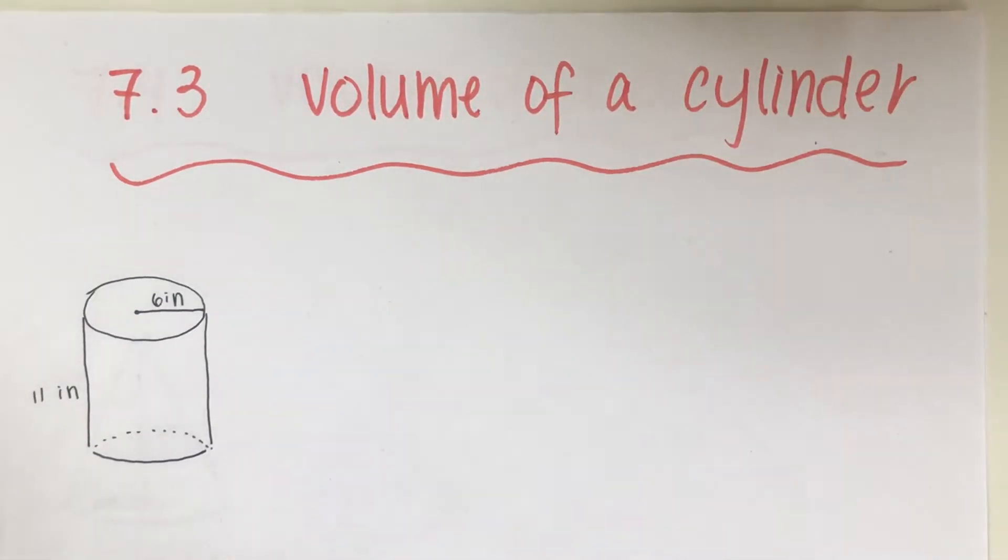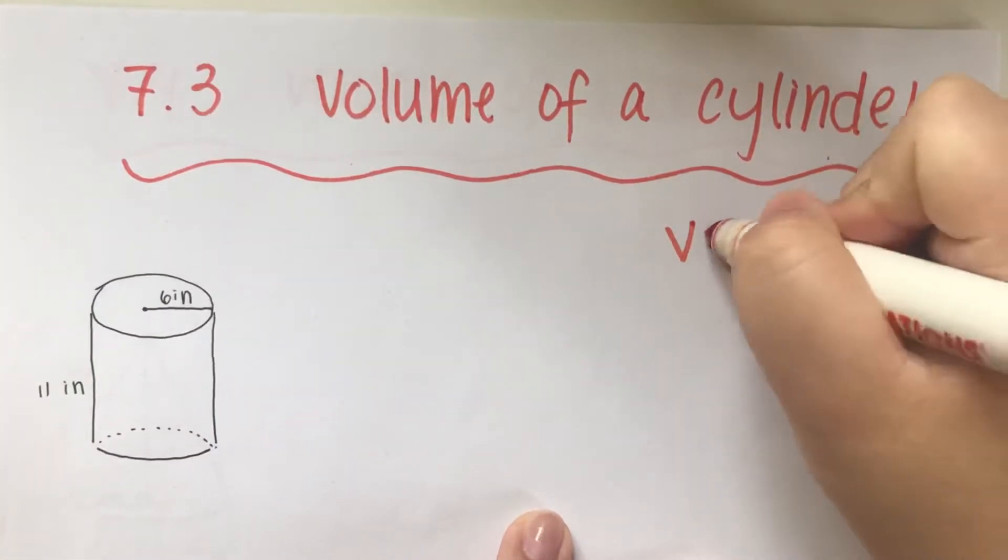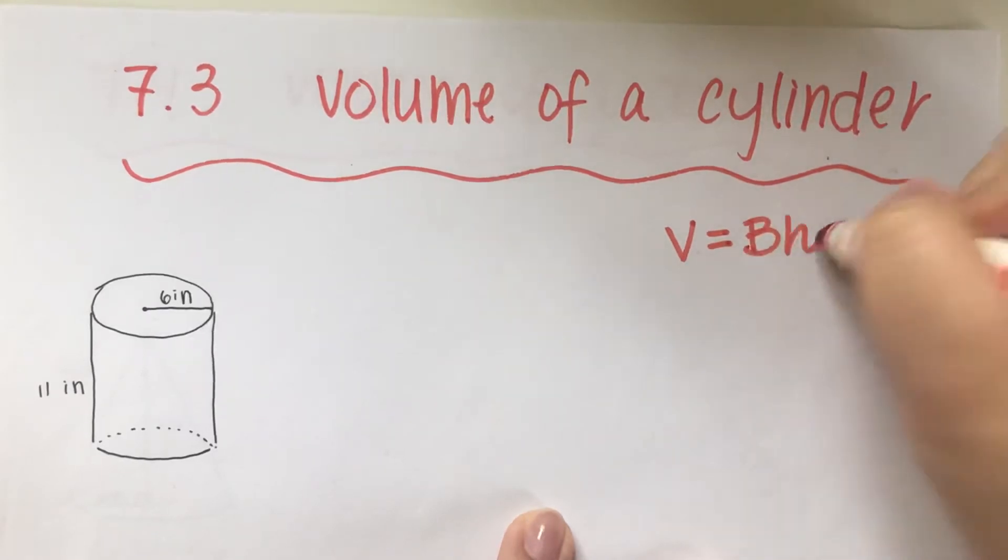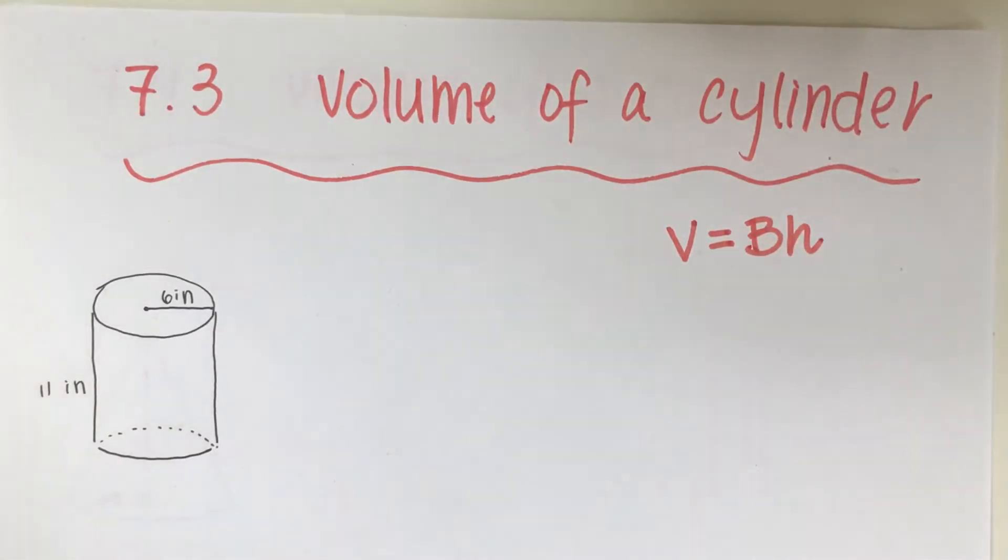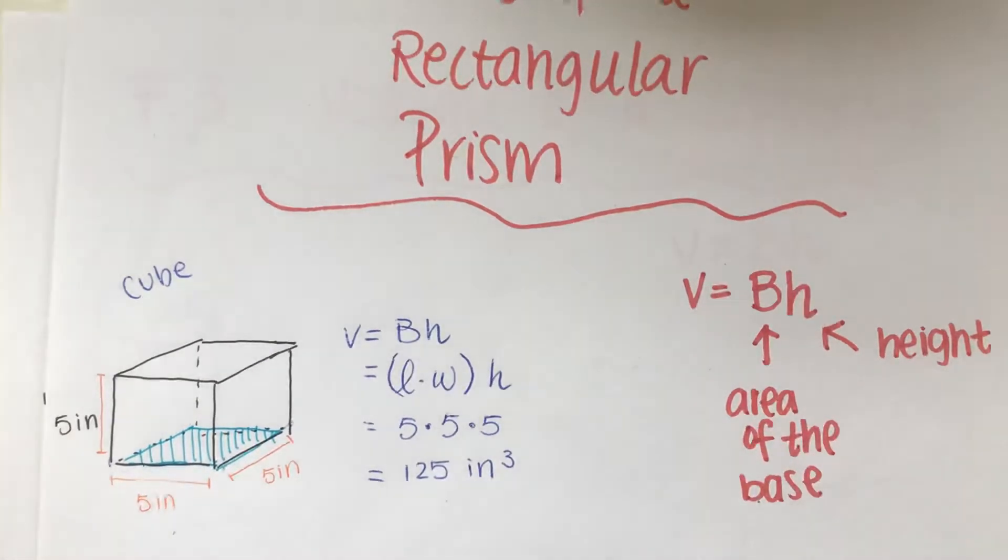Prism, we learned it from last lesson, right? In order for me to find the volume, it's area of the base multiplied by the height.